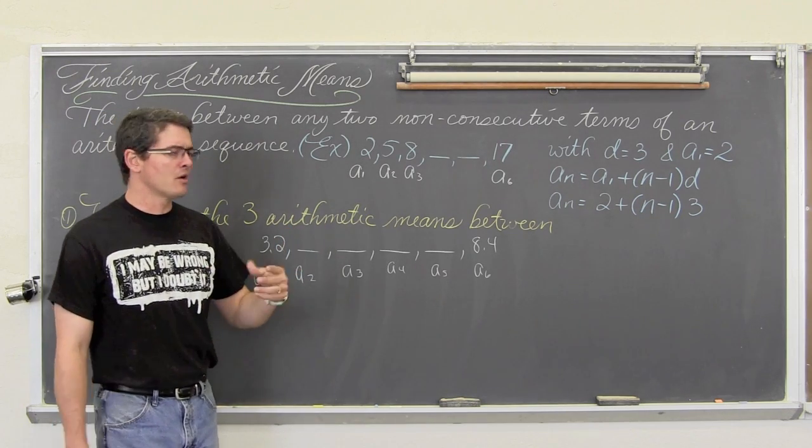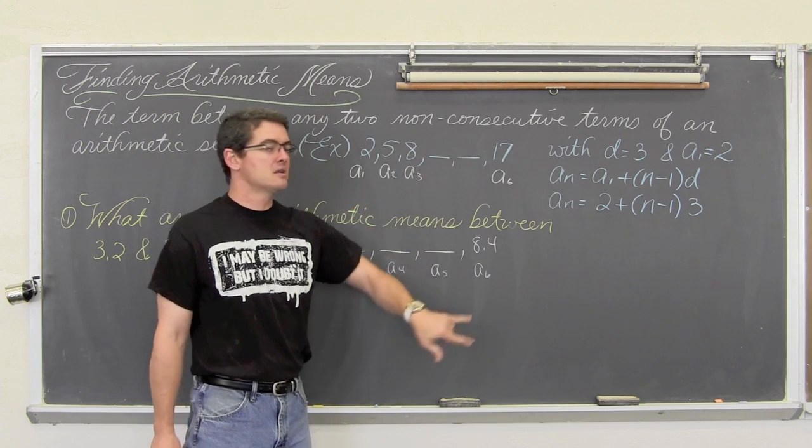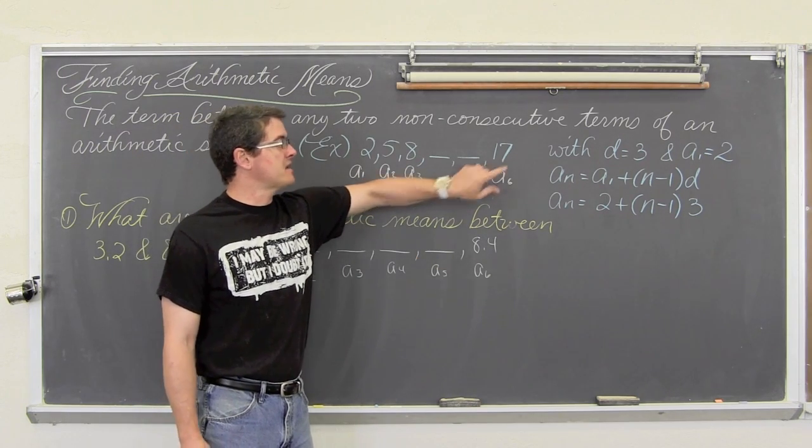I have a pretty simple example here and then we will work through a couple of real problems. We have 2, 5, 8, a couple of blanks - these are going to be our arithmetic means - and then 17.